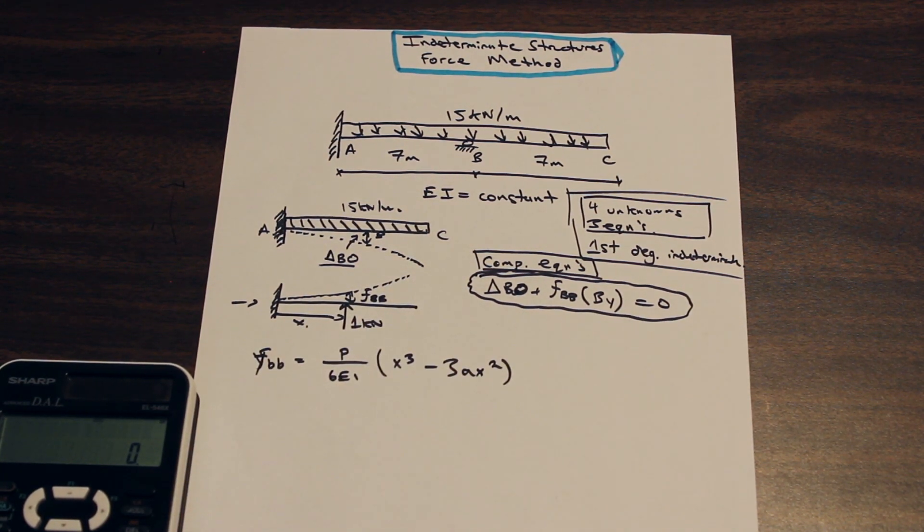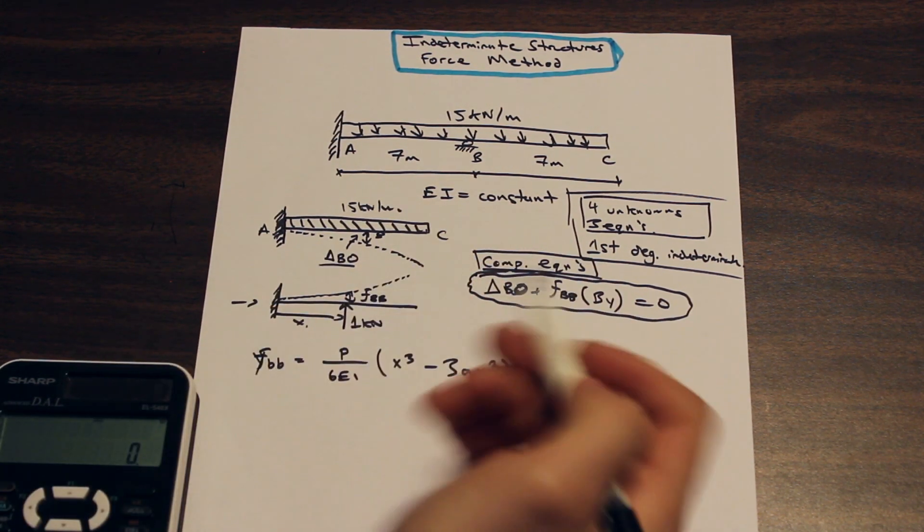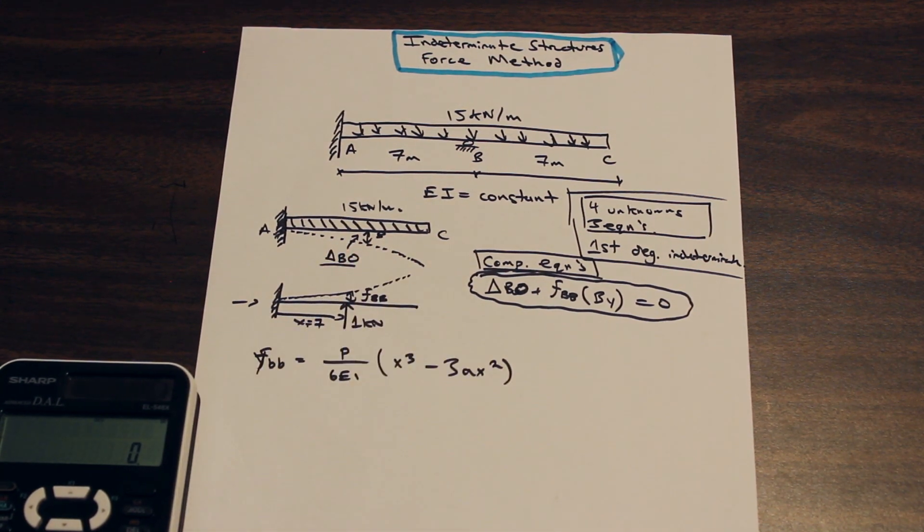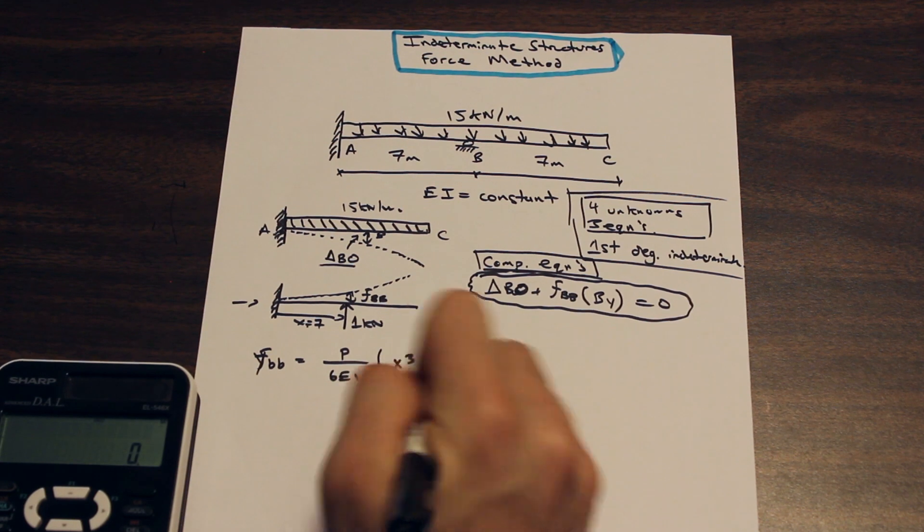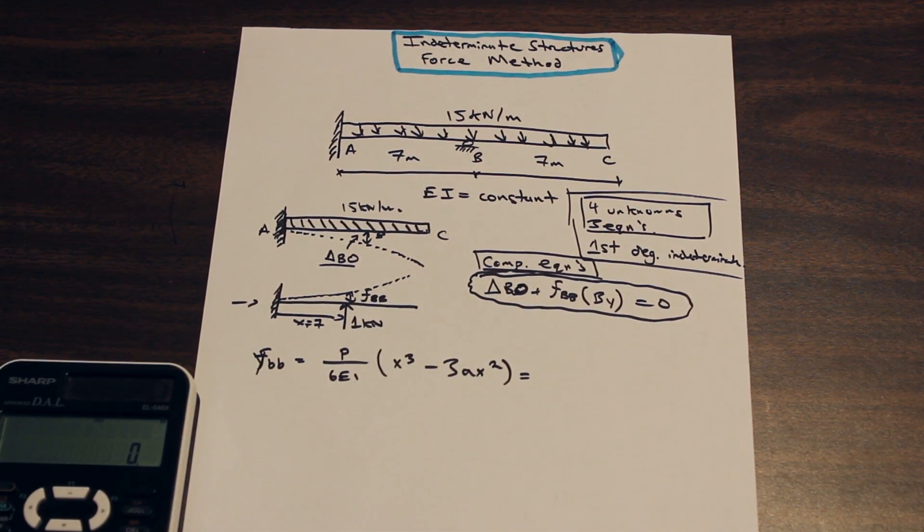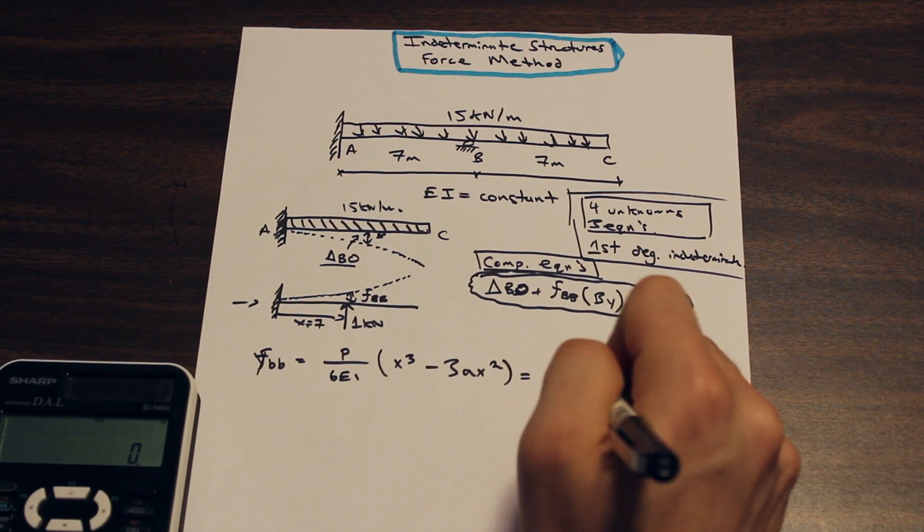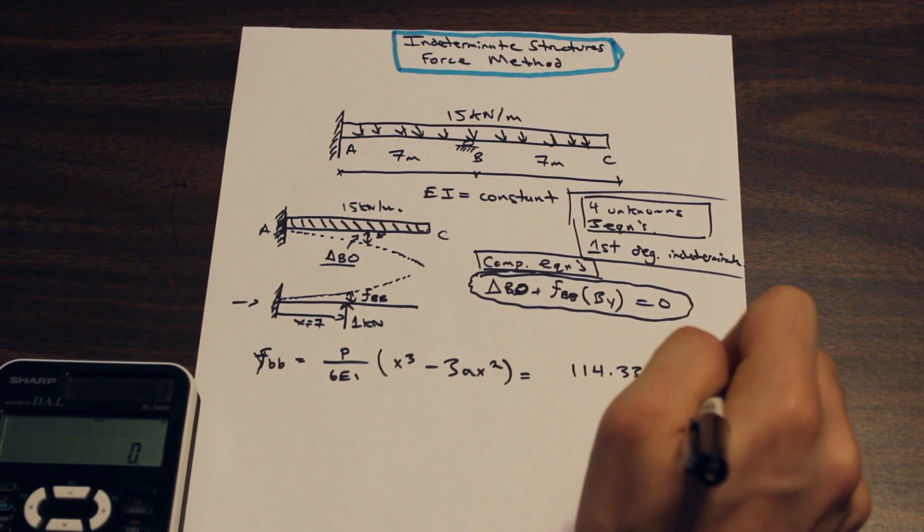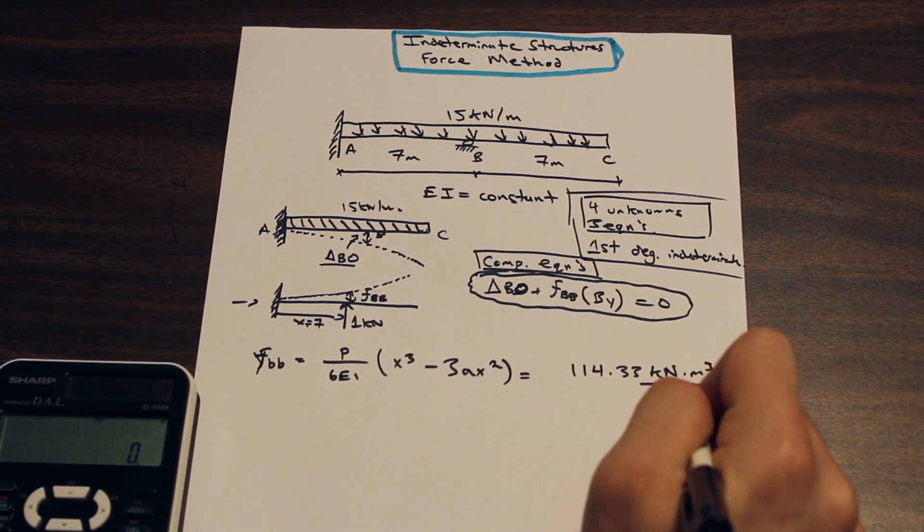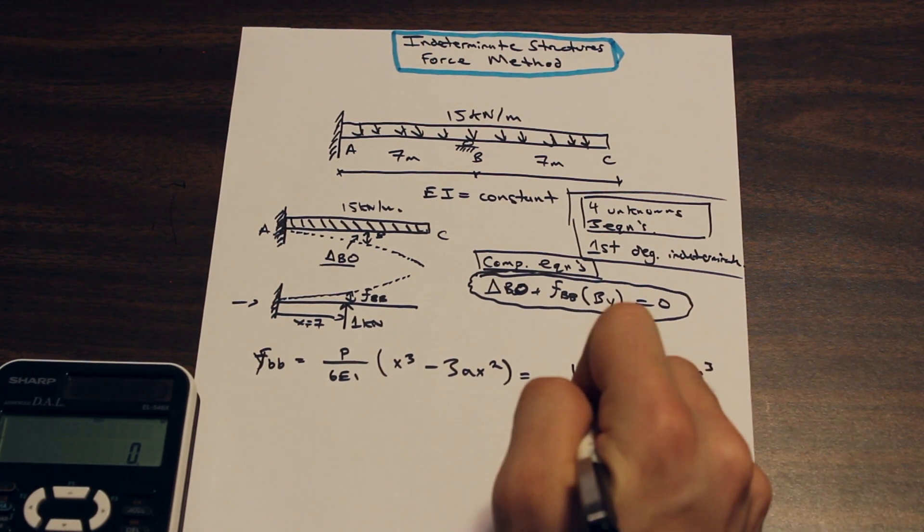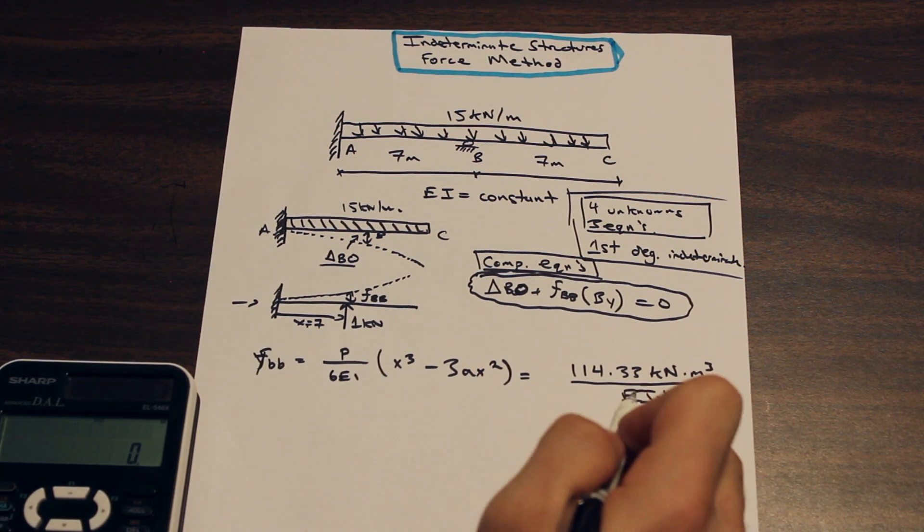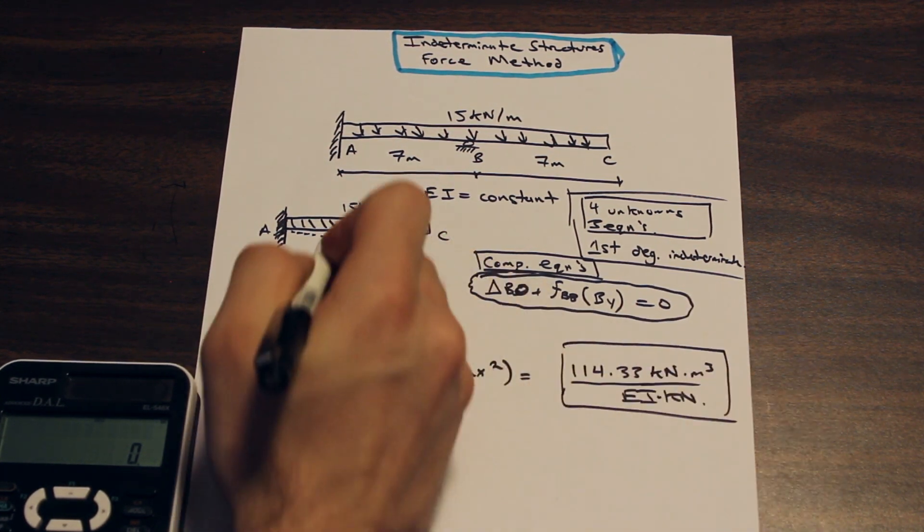So A is equal to X, so this is just going to also be the distance to here, which is 7. So if we go ahead and plug 7 in for A and X and P, we are going to arrive at a deflection of 114.33 kilonewton meter cube per kilonewton, and that on the bottom of that will be EI. Perfect. So just leave the EI in there, because EI is constant.